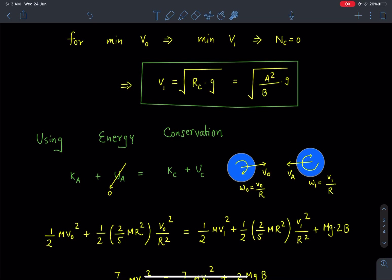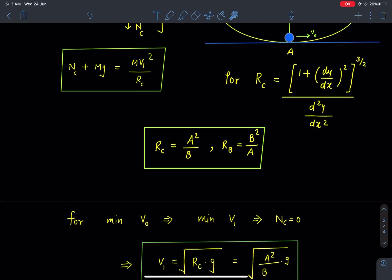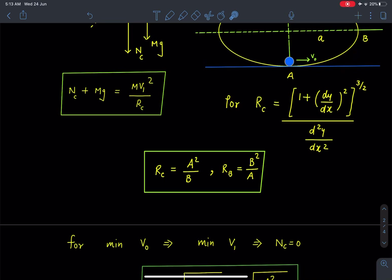If the projection velocity at bottommost point is minimum, so we can say after reaching the topmost point of the ellipse, the speed also is going to be minimum. That means V₁ is going to be minimum.